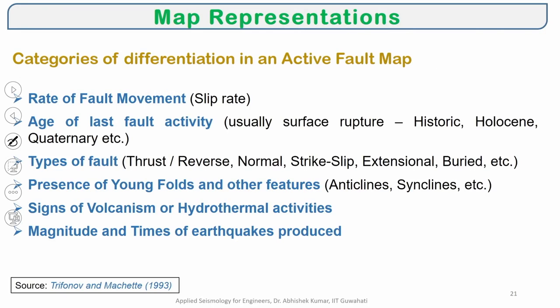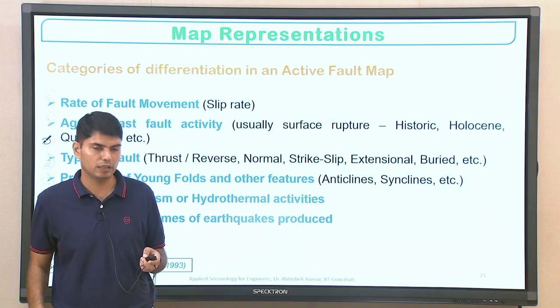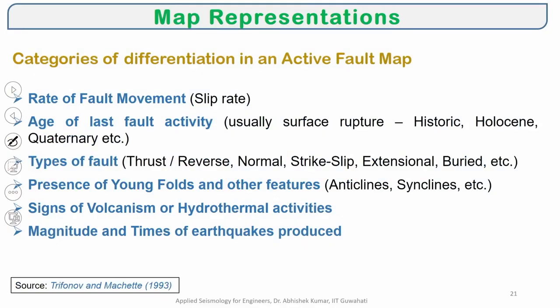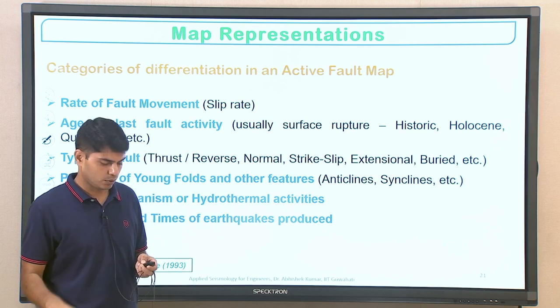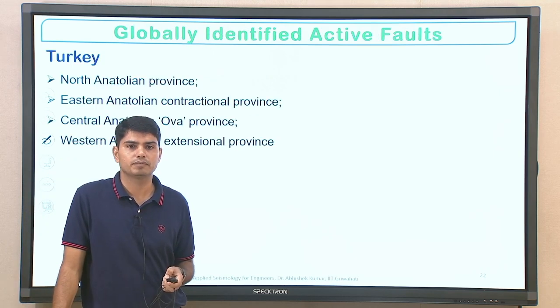Categories in which active fault movement can be utilized in terms of map representation include: rate of fault movement — different rates of movement along different faults can be mapped. Similarly in terms of age — some faults showing movement in Holocene, some in Quaternary, some in Pleistocene — can be represented accordingly. Based on the type of fault plane mechanism, different kinds of mechanism can be represented on the map. If there are volcanic or hydrothermal activities, that can also be represented. If we have fault plane solutions with information about when the earthquake happened and its magnitude, that can also be clubbed to find out the location and develop the map for active faults.